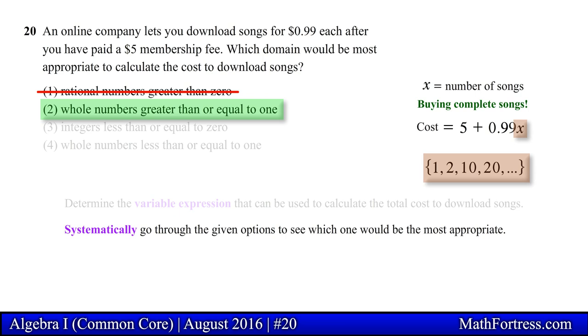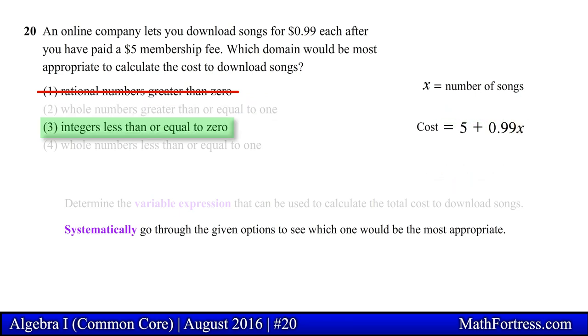Just to make sure let's take a look at the remaining options. Option 3 reads integers less than or equal to 0. This set will include numbers such as 0, negative 1, negative 5, and negative 20.